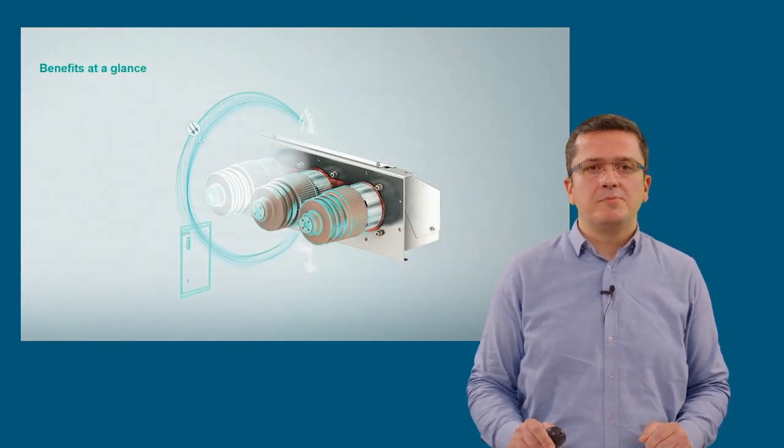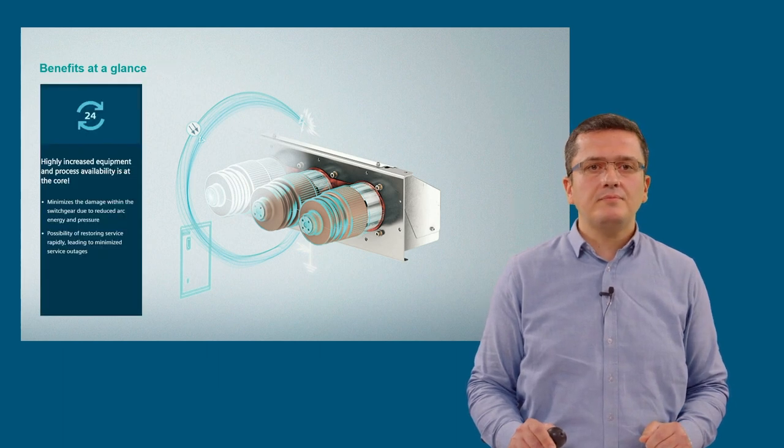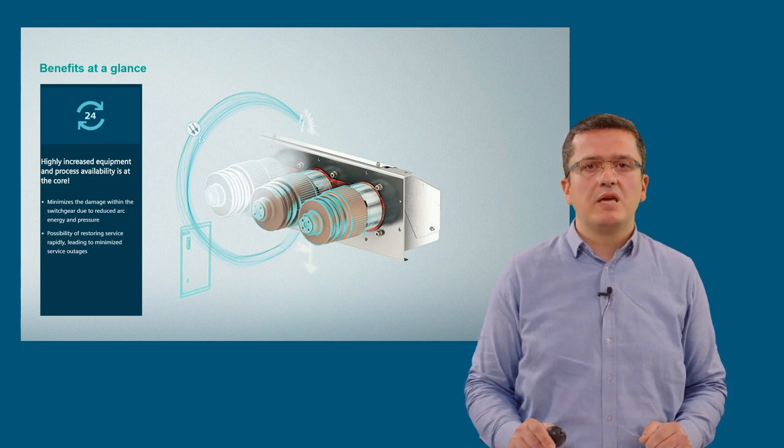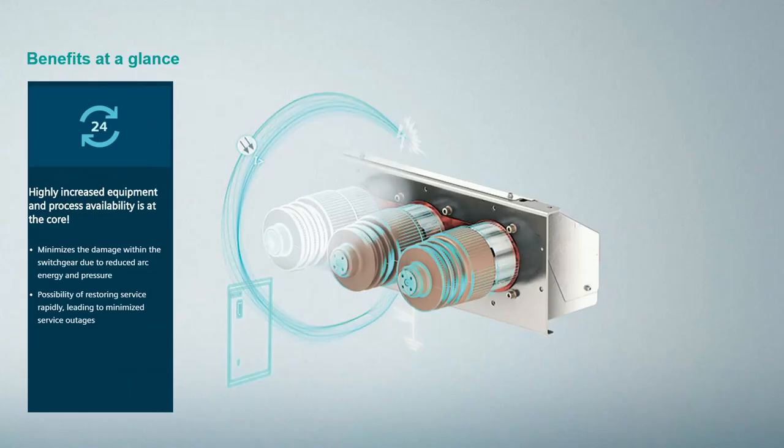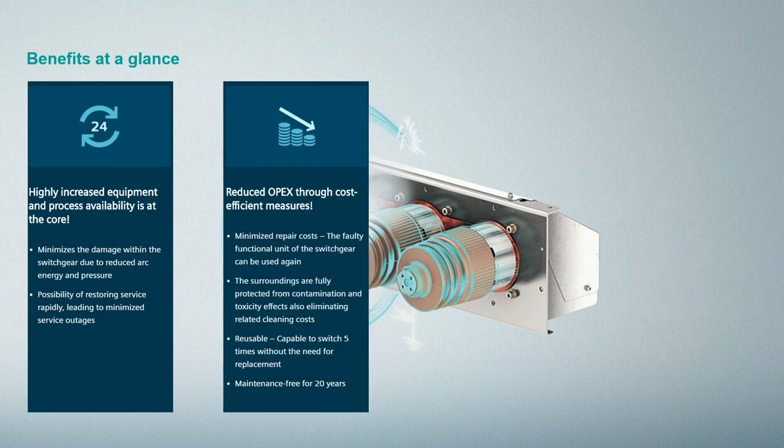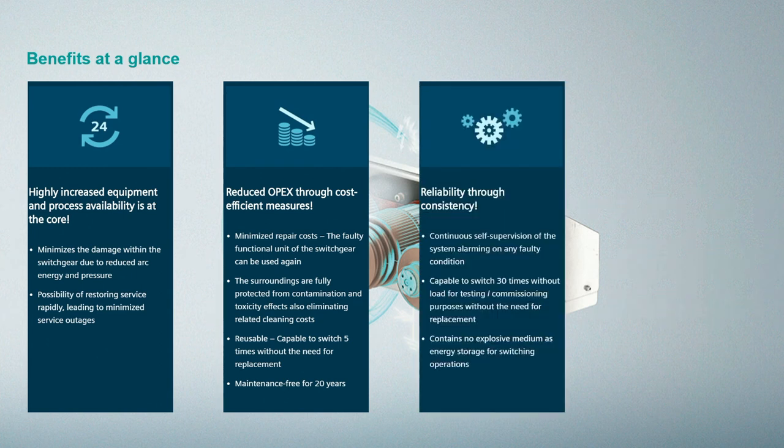It is worth mentioning the explicit benefits of the solution. First is the minimized downtimes due to prevention of the damage given to the equipment. This not only leads to increased availability of the processes, but also helps eliminate related penalties. Second is elimination of the impacts on the surroundings, which in many cases is being underestimated during risk analysis and lifecycle related expenditure calculations. But actually, it takes a big role on the costs after an arcing fault. Overall, it is the reduced OPEX supporting the business.